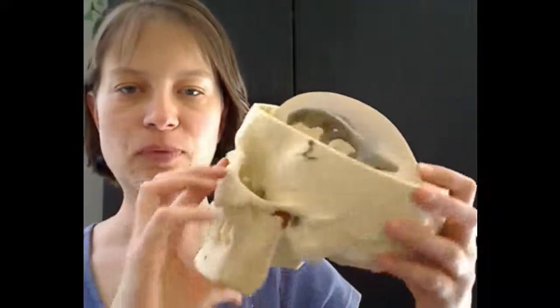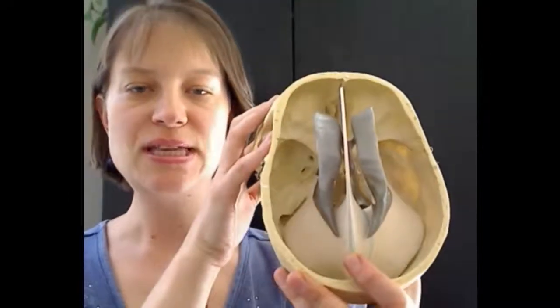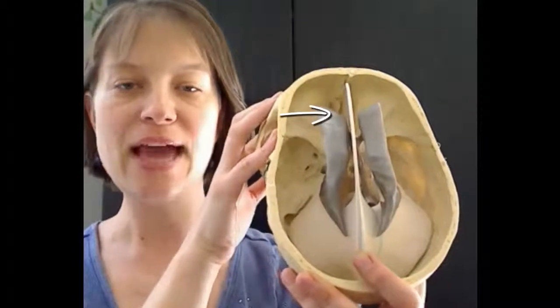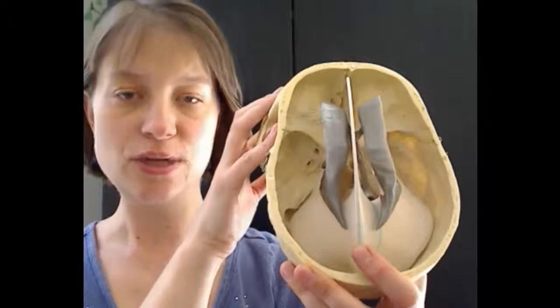So here we have the cranium. And when we look down from above, you can see the falx runs from front to back, and it divides the left and right hemispheres of the cerebral cortex.